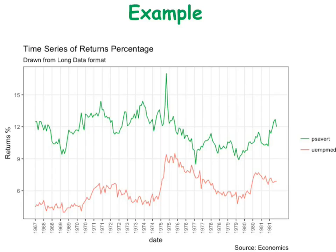Here's an example. What I've got is a graph looking at the percentage return, with data going from 1967 through to 1981. There are two different funds — one in green, one in red — and I want to compare each of these three features.